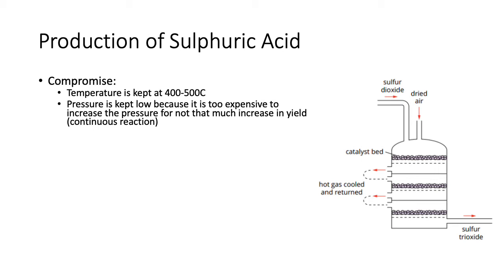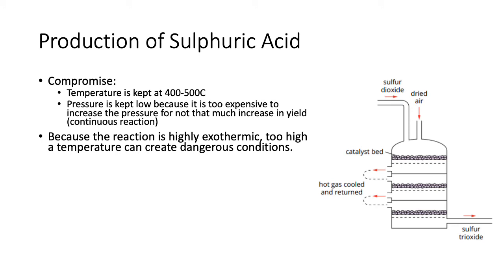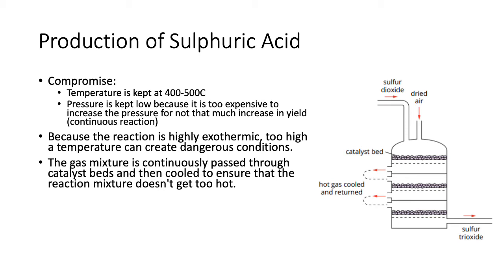They make enough at atmospheric pressure, and making everything high-pressure would not be viable. Because the reaction is highly exothermic, too high a temperature can create dangerous conditions — you could melt things and everything escapes. So you do not want it to get too hot. If you ran it through lots of catalysts continuously, it would get way too hot. To stop that from happening, the gas mixture is continuously passed through catalyst beds and then cooled to ensure it doesn't overheat.